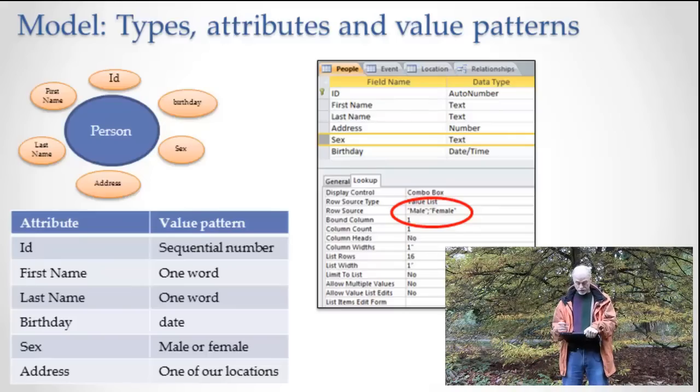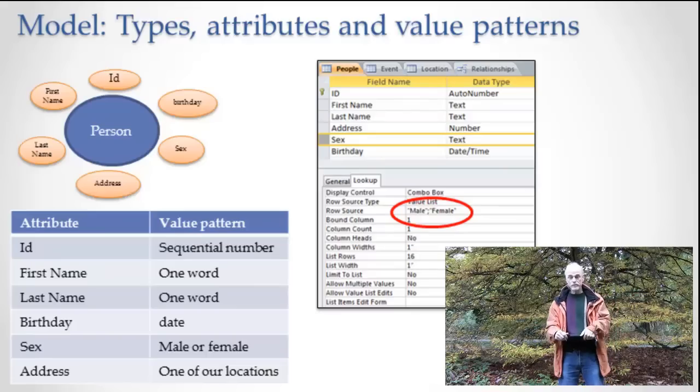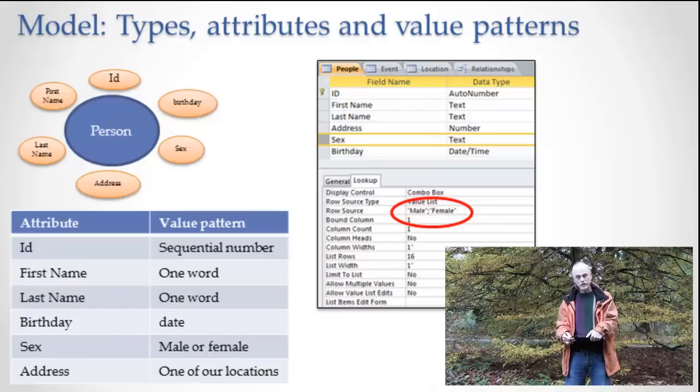The people table has certain, in this case, they call them field names, but don't be thrown by the vocabulary. A field name is a column. A field name is a column in table terminology. It's an attribute in our other terminology. Sorry that there's so many words to describe these same things, but that's just kind of how it is. There's lots of words all describing the same thing.